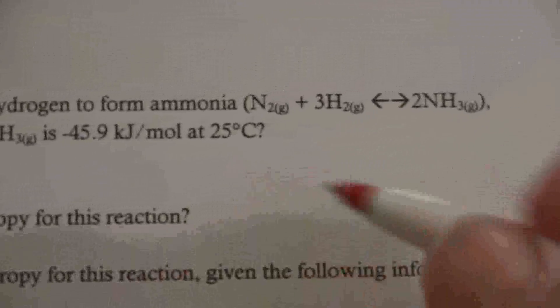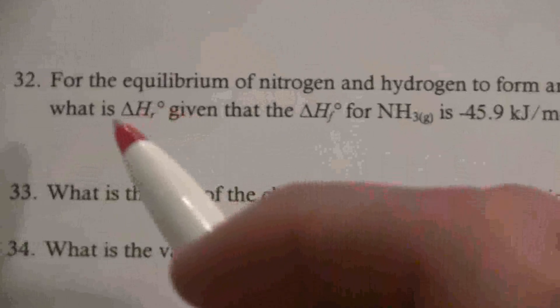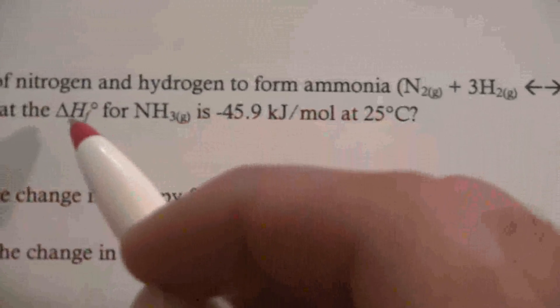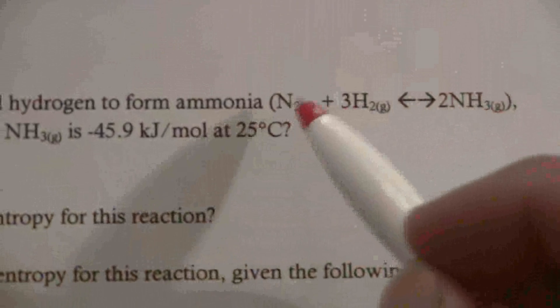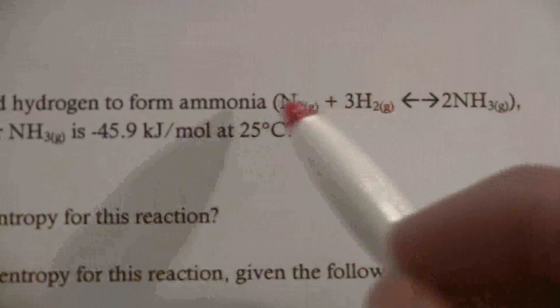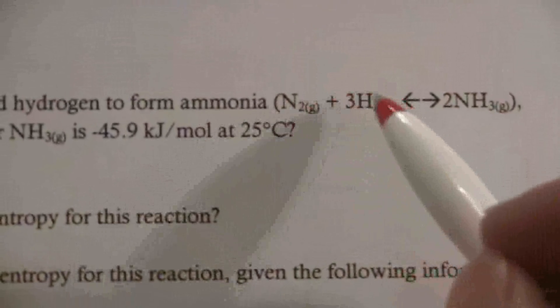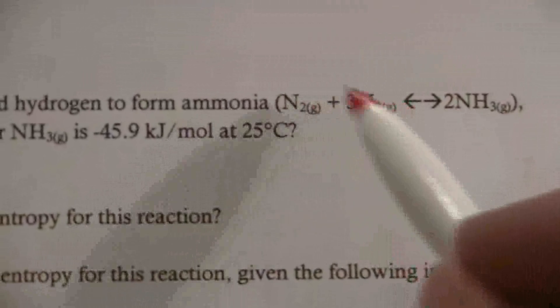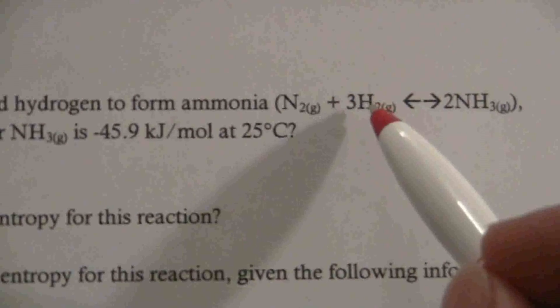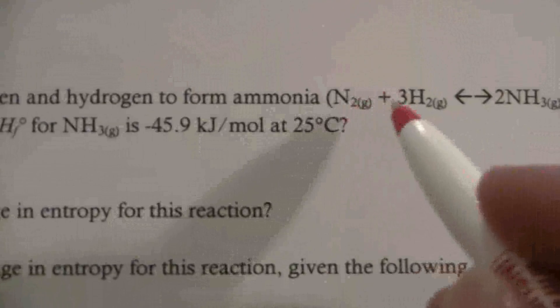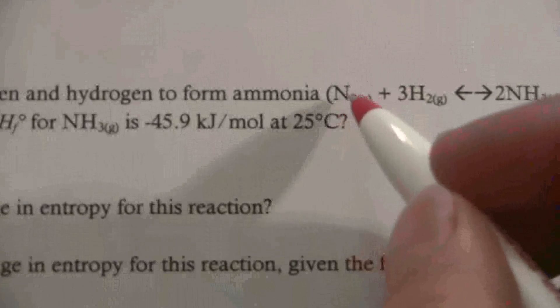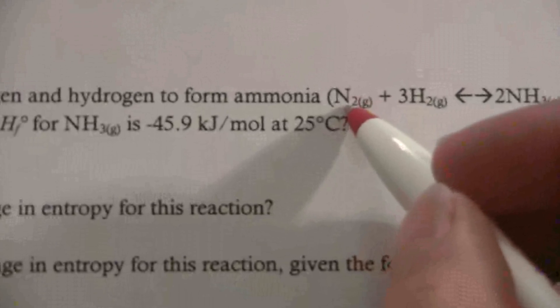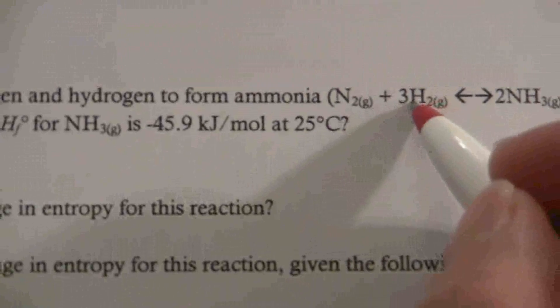Okay, so we want to find the delta H for the reaction, and we're doing it from the delta H of formation for each of these. But we know the delta H of formation for the elements because it's always zero for the elements in their natural states. Nitrogen in its natural state is a gas at 25 degrees, so its delta H of formation will be zero, likewise for hydrogen.